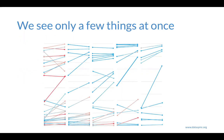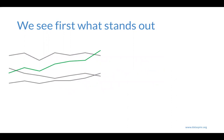We do know some things about how we see things. One is that we can only see a few things at once. Looking at many, many lines, you cannot make sense of all of them at once. It varies, but a good rule of thumb is four to maybe six things at a time is how much our brains can take in.